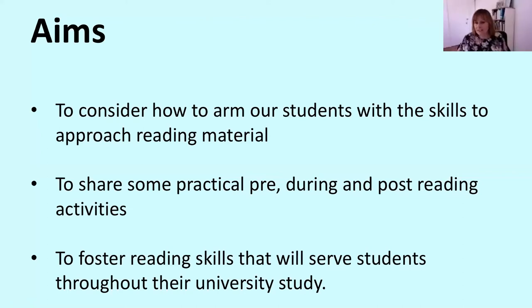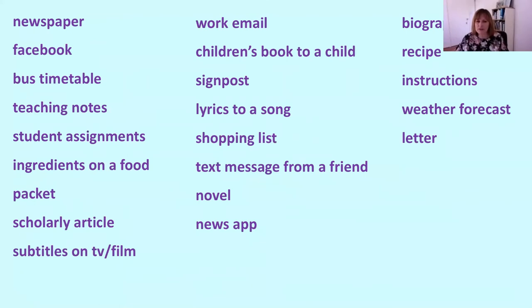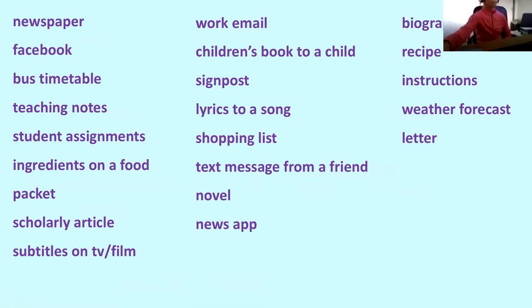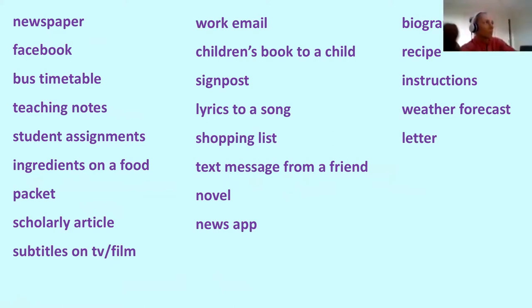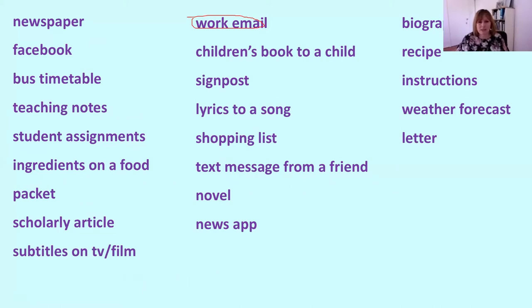We are already effective readers because we're university teachers. We have a warmer for you today — look at these different types of text and circle the ones you've already read. As you're circling, think about how you read each one, because we don't read in the same way. Maybe you were skimming for basic meaning, maybe scanning for particular details, or maybe reading really closely.